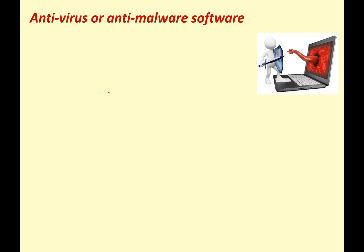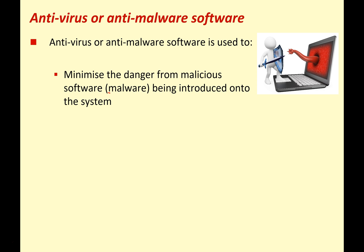Antivirus or anti-malware software is used to minimize the danger from malicious software being introduced onto your system. Any malicious software is called malware — the term comes from 'mal' in malicious (meaning bad) and 'ware' in software. Malware includes viruses, trojans, and many other types of bad programs. Anti-malware software detects, prevents, and removes malware by scanning incoming files or the whole hard drive on a regular basis to identify threats and safely remove them.